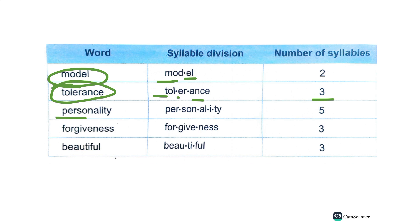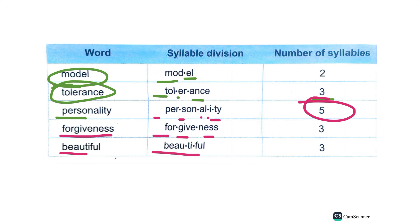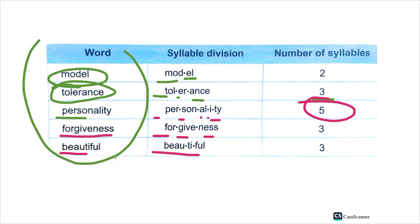For example, 'personality' is a four-syllable word. 'Forgiveness' is a three-syllable word. 'Beautiful' is also a three-syllable word. Words like 'personality' and 'forgiveness' are examples of multi-syllable words.